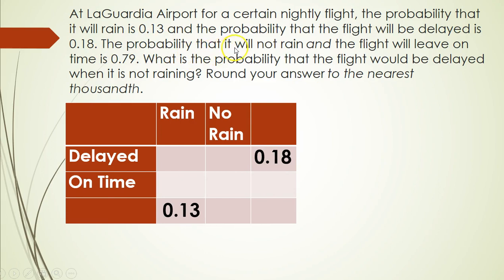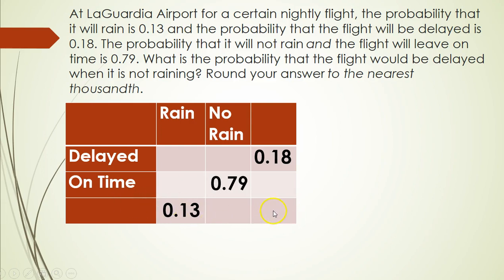Then it says the probability that it will not rain and the flight will leave on time. Since that involves two things, it goes in one specific box — not raining and on time — so we put 0.79 there. The key thing to know is that when I add up each column and each row, they have to add up to one. That's what helps me figure out what goes in the remaining places in the table.